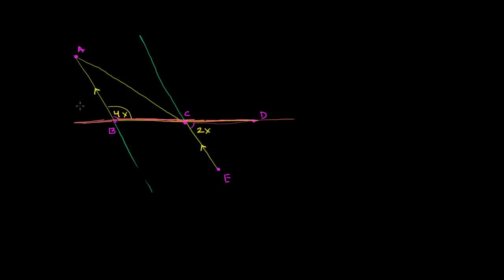That line is the transversal, and these are the parallel lines — one parallel line and the other parallel line. You can almost try to zone out all the other stuff in the diagram. So if this angle right over here is 4x, it has a corresponding angle where the transversal intersects the other parallel line. This right here is its corresponding angle, so this will also be 4x. We see that the angle of 4x and the angle of 2x are supplementary — they're adjacent, their outer sides form a straight angle, so their measures add up to 180 degrees.